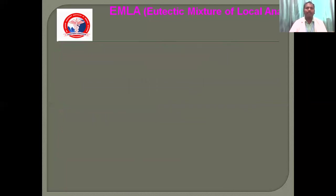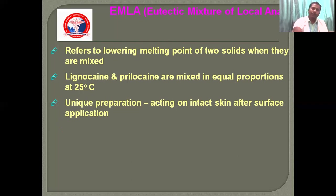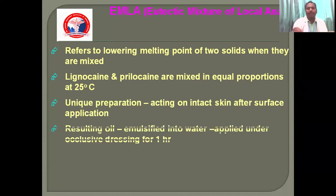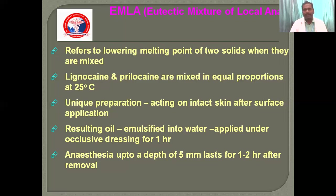EMLA is a eutectic mixture of local anaesthetics mainly used for intact skin surfaces. It refers to the lower melting point of solid mixtures when they are mixed. The mixture of lignocaine and prilocaine in equal proportions at 25 degrees forms an oil emulsified in water and is applied under an occlusive dressing for one hour. Anaesthesia up to a depth of 5 mm lasts for 1-2 hours after removal. It is mainly used in children and adults for pain relief prior to puncture and injection procedures.